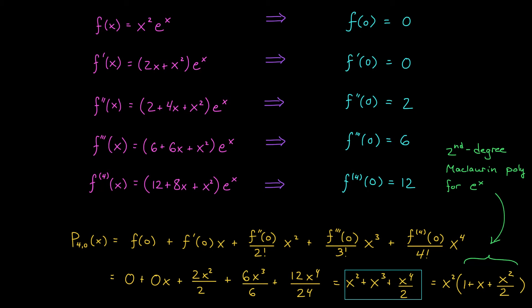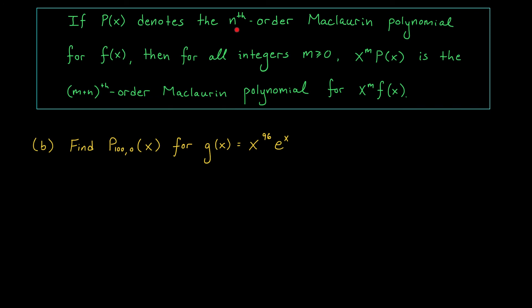It turns out this connection holds generally when you're dealing with a positive integer power of x times some other function. If you know the nth order Maclaurin polynomial p of x for some function f, and you multiply that polynomial by x to the m, you're going to get a Maclaurin polynomial for x to the m times f of x. If p had degree n and you multiply by x to the m, those powers add and you get a polynomial of degree m plus n.